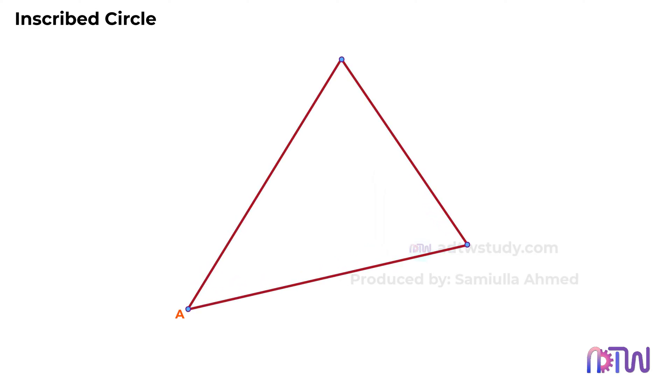Consider a triangle of any shape. To inscribe a circle inside this, we need to divide any two corner angles of the triangle into half.